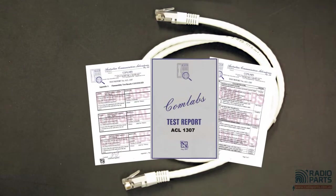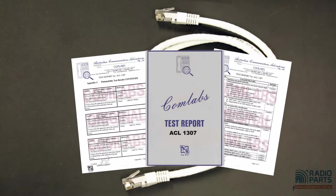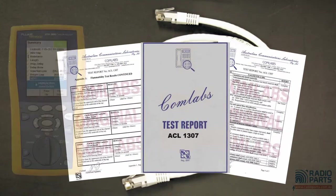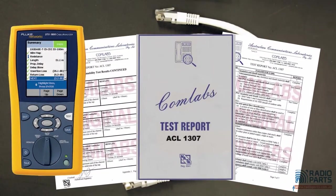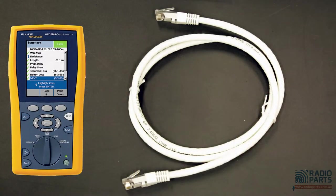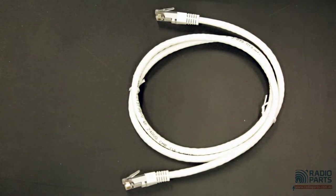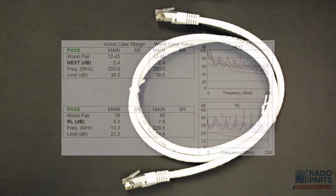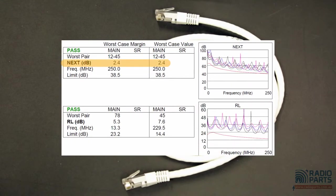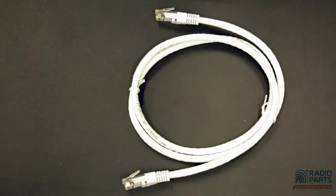Those test reports are from the industry standard meter, which is called a Fluke DTX1800, and you'll notice on the Cat6 cable those standards are exceeded significantly. The crosstalk of the NEXT is exceeded by a minimum of 2.4 dB, and the return loss to show the quality of the connectors is exceeded by a massive 5.3 dB. So we're almost double what the requirement is of the standard.